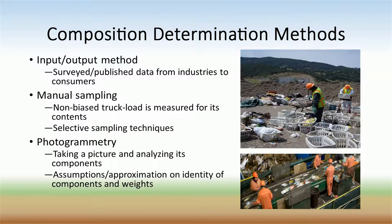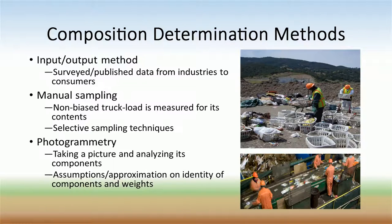Composition determination methods are simple methods used to determine the amount of waste in each broad category. These include the input-output method, manual sampling, and photogrammetry. The input-output method uses published data from industries to estimate waste compositions. Flows of all goods and products to the consumer gives a general picture of the eventual waste produced from these items. Manual sampling uses waste from garbage trucks to characterize the municipal waste stream. A number of garbage trucks are randomly selected, and a portion of their contents are sampled and characterized. These characterizations are then aggregated and extrapolated to the entire population. Finally, photogrammetry is as simple as taking a picture and analyzing its waste components. Upon analysis, assumptions and approximations must be made on the weight and identity of the components in the picture.